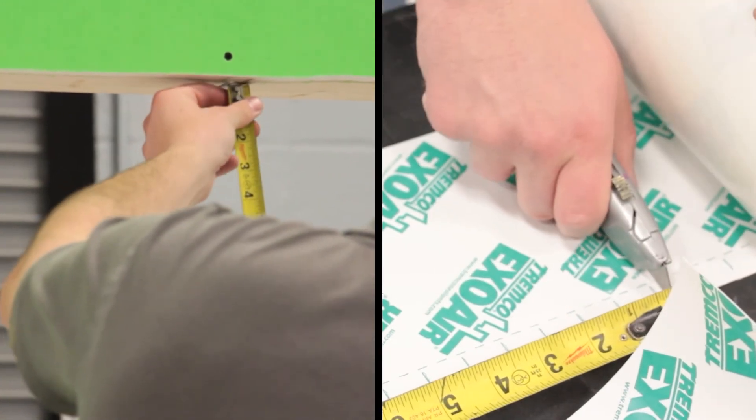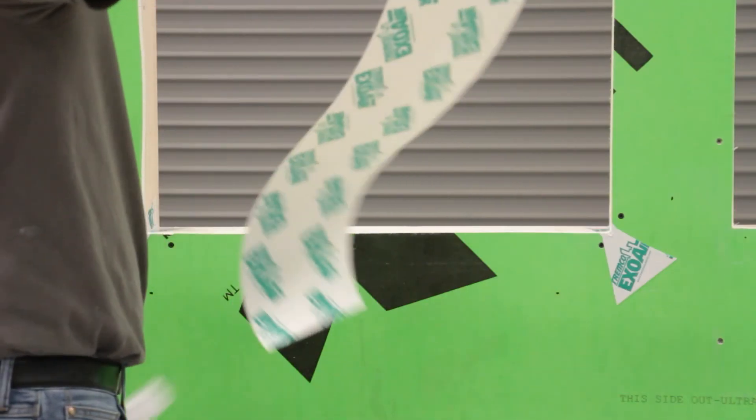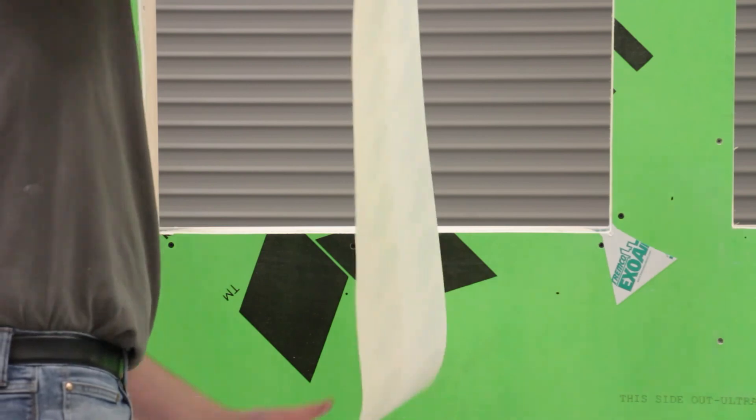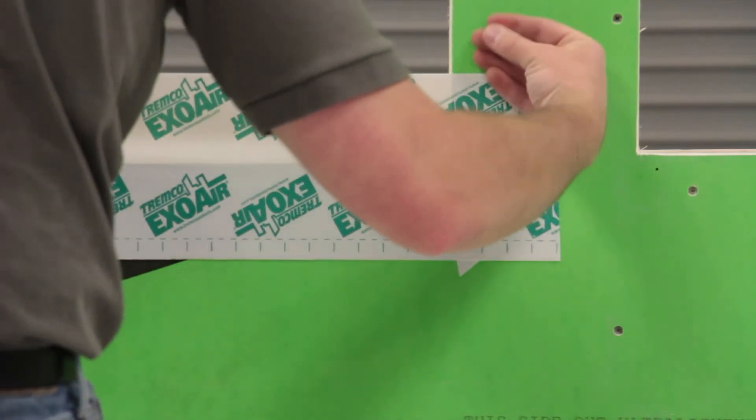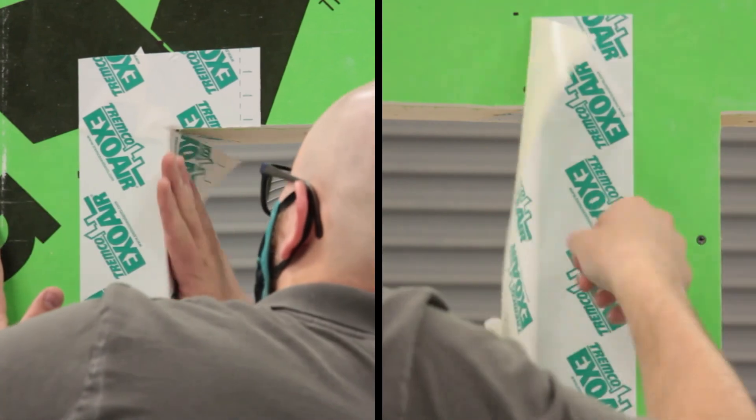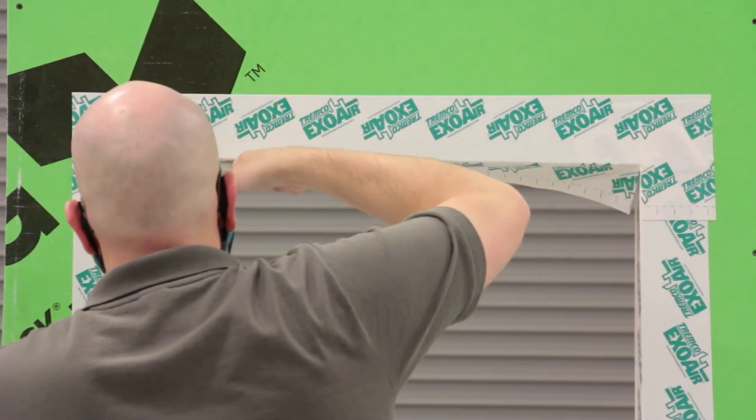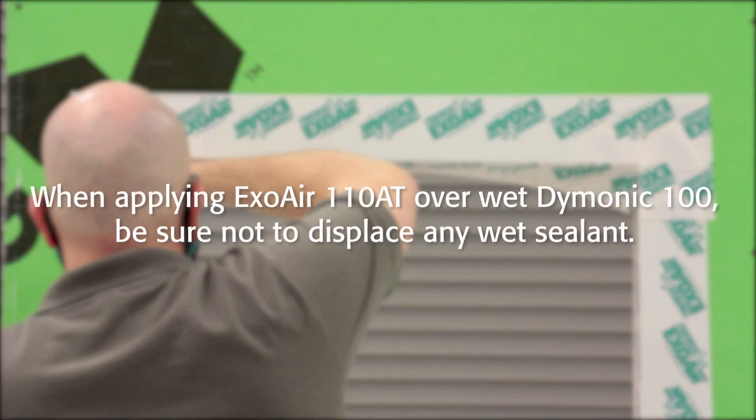Next, measure the opening and cut the ExoAir 110AT to length, extending at least 3 inches on all sides. Install the ExoAir 110AT starting with the sill, then the jams, and finally the header. Note that ExoAir 110AT sheets can be applied on top of uncured Dymonic 100.